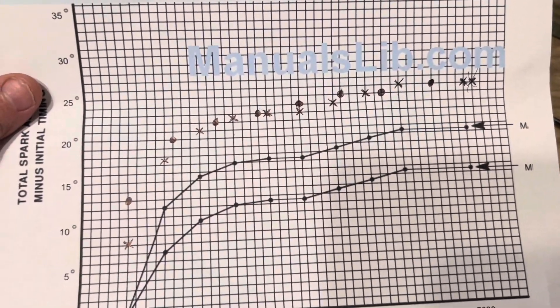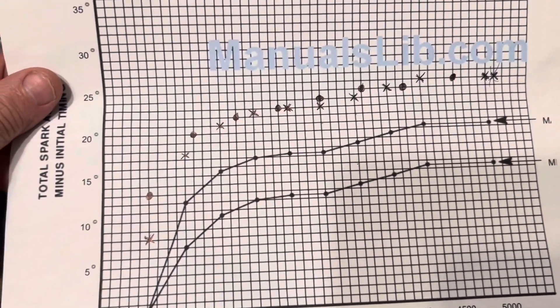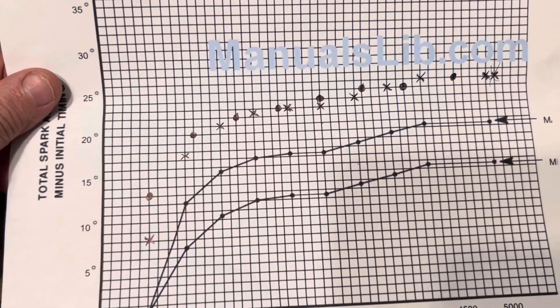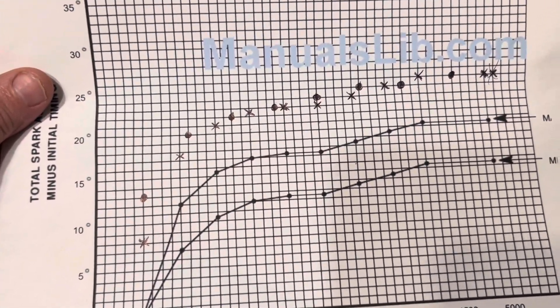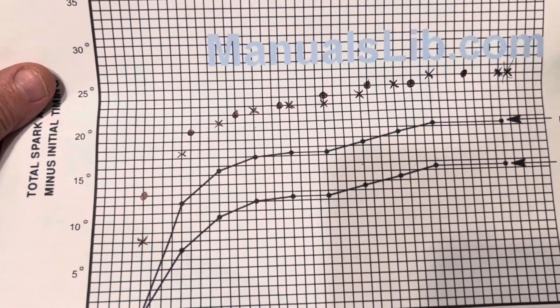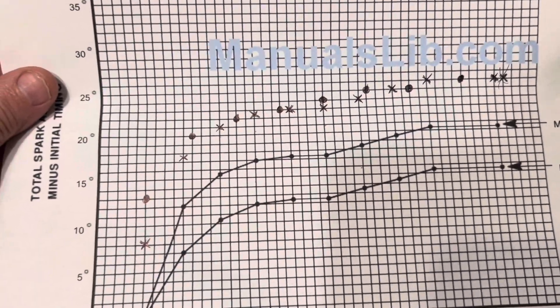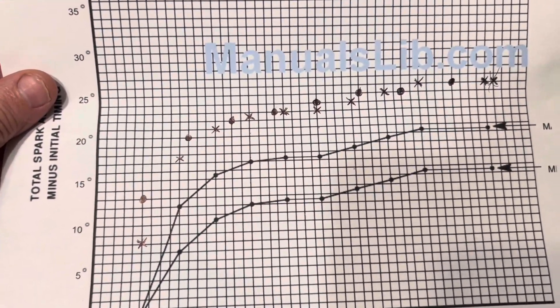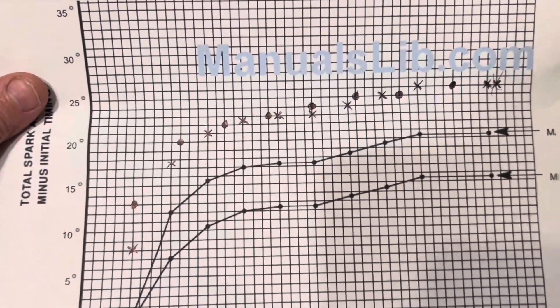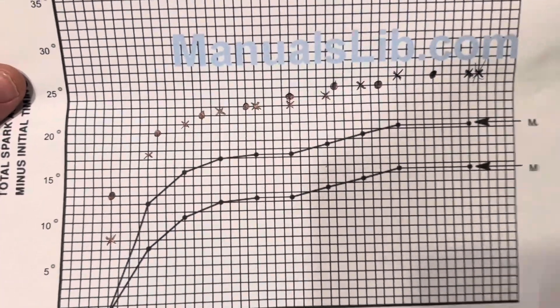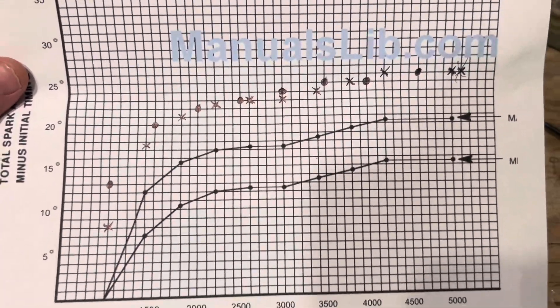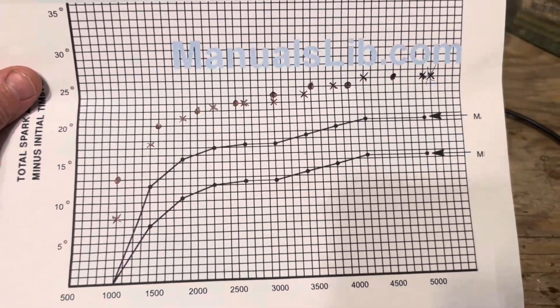I believe the initial setting was minus two. So if you set the setting on this to positive three, that'll be five degrees more. Positive three degrees of base timing will give you the curve you see in the black dots. And that should work with this engine. All right. So that pretty much discusses the timing curve.